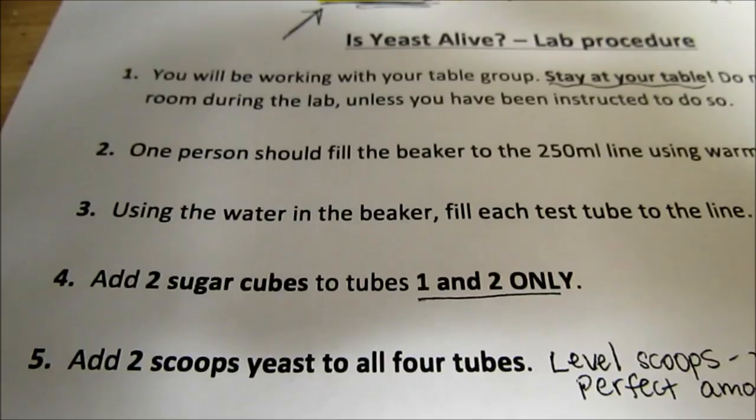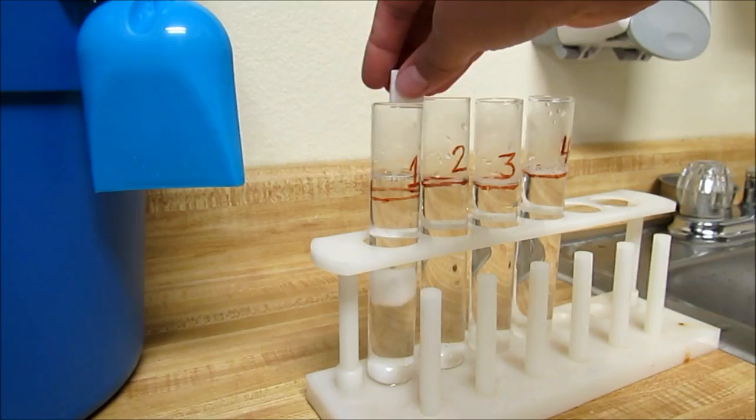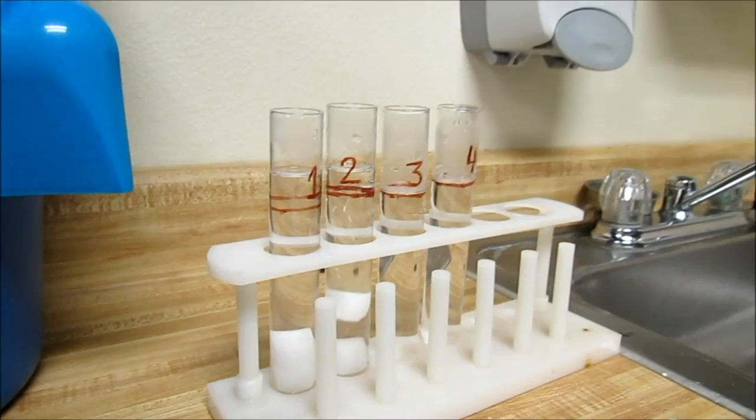So I can do the next step, which says to add two sugar cubes to only tubes one and two. So there's tube one, one sugar cube, two sugar cubes, tube two.